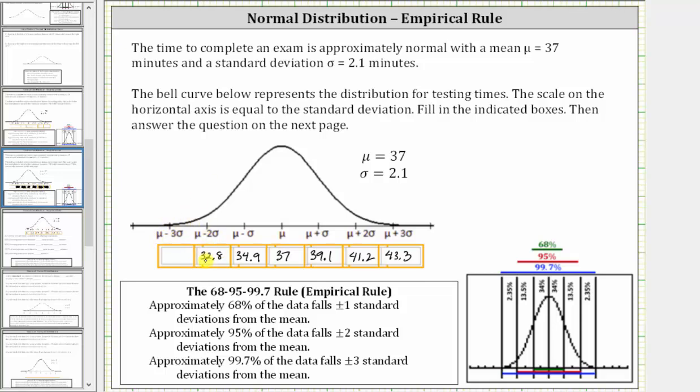And mu minus 3 sigma is equal to 32.8 minus 2.1, which is 30.7. And now let's continue on the next slide.